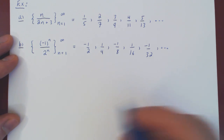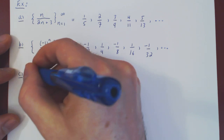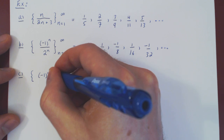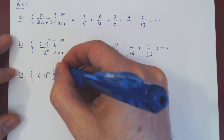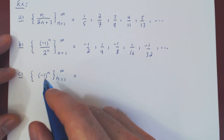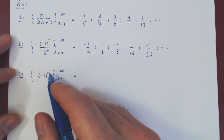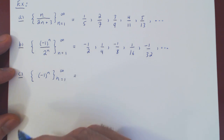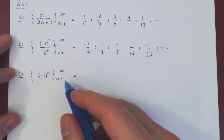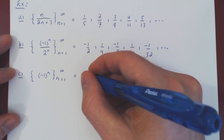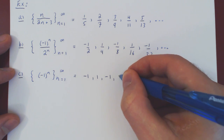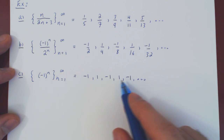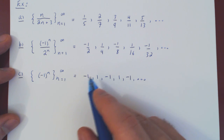We could also look at the simpler sequence (-1)^n. When you take an even power of -1, you get +1; when you take an odd power, you get -1. Beginning with an odd power, the sequence will be: -1, +1, -1, +1, -1, and so forth. So this sequence oscillates forever between -1 and 1.